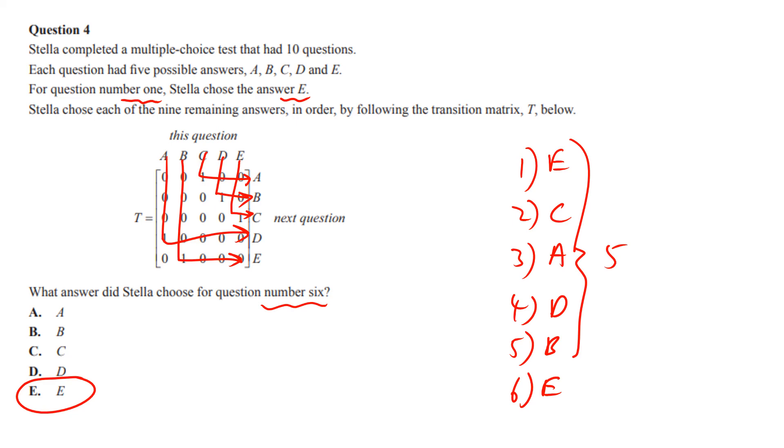It'll go E, C, A, D, B on and on forever. Don't need to do any calculator matrix stuff. Examiner's report - what do they know?